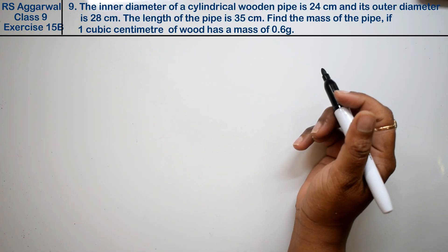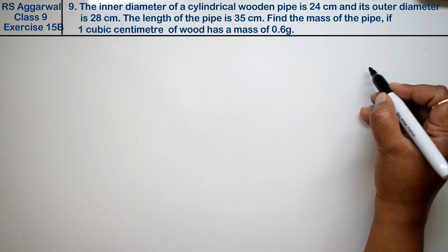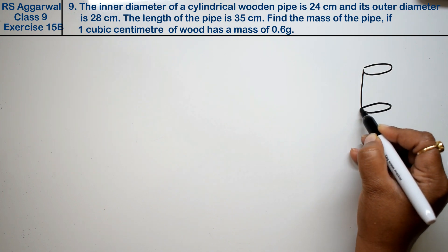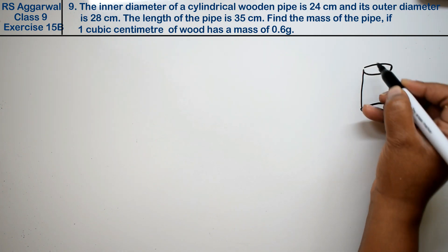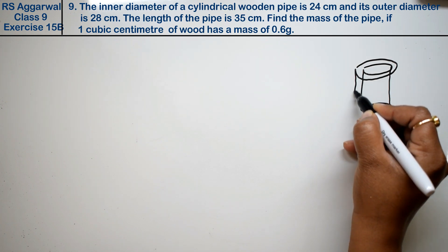Let's do question number 9 of exercise 15B, that is volume and surface area of solids. Question 9: The inner diameter of a cylindrical wooden pipe is... Inner diameter means there is one cylinder inside and one cylinder outside.